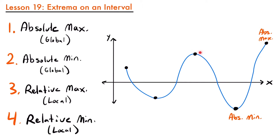You can only have one absolute maximum and one absolute minimum, but you can have multiple relative maxes and mins. This point would be a relative max — all the points around it are lower than it. Every time you see a little hump, that's a relative max: values increase, reach the peak, then decrease again. Similarly, this point is the relative minimum for this general area — values get smaller and smaller, stop there, then get larger again, all the way up to our relative max.